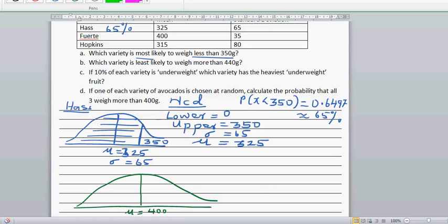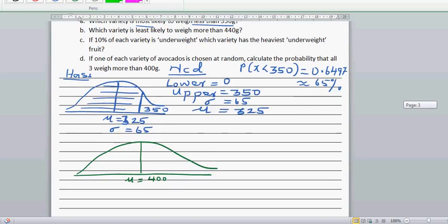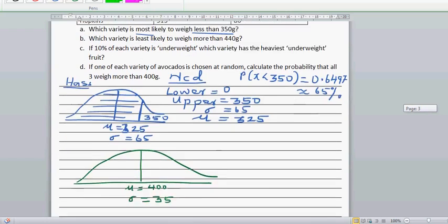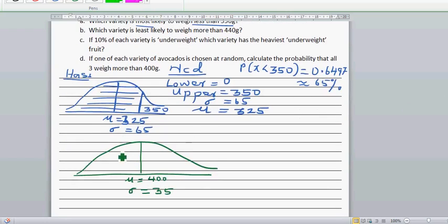Standard deviation is 35 grams. You want to find the probability is less than 350. So 350 will come to the left. You want to find what is this probability. Just looking at the area, I can say the probability that x would be less than 350 would be less than 0.5.